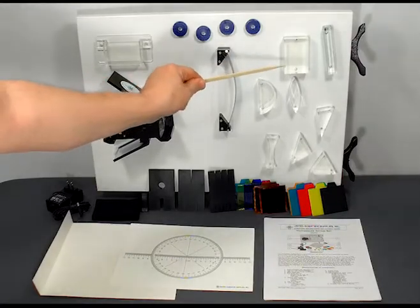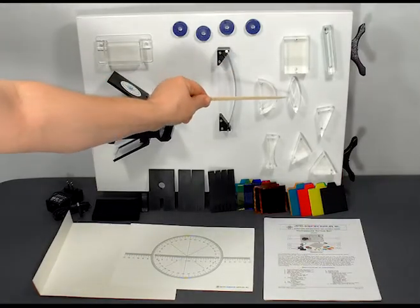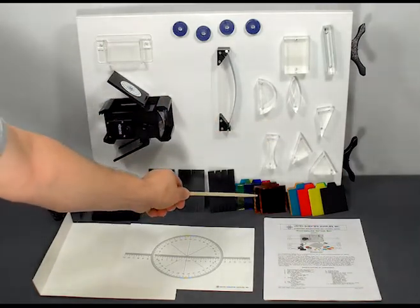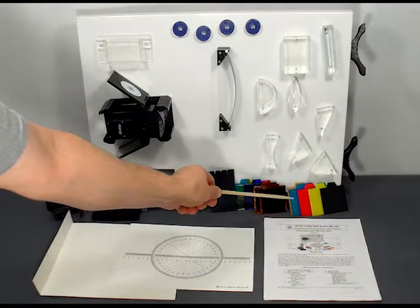The components consist of clear refraction blocks, optical components, prisms, as well as clear and opaque color paddles.